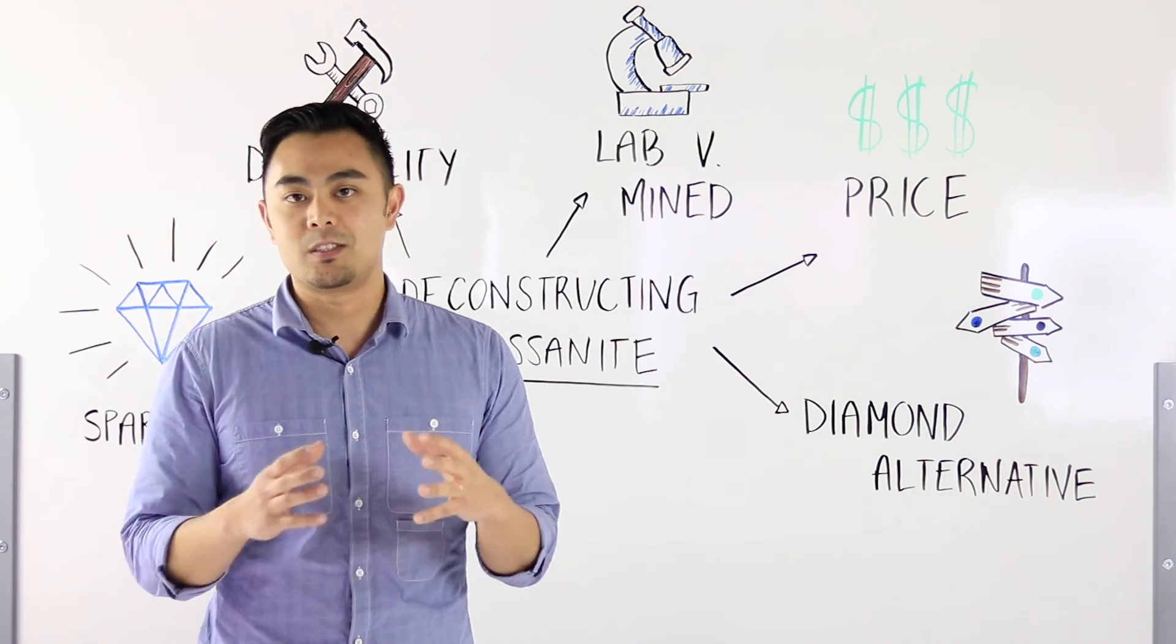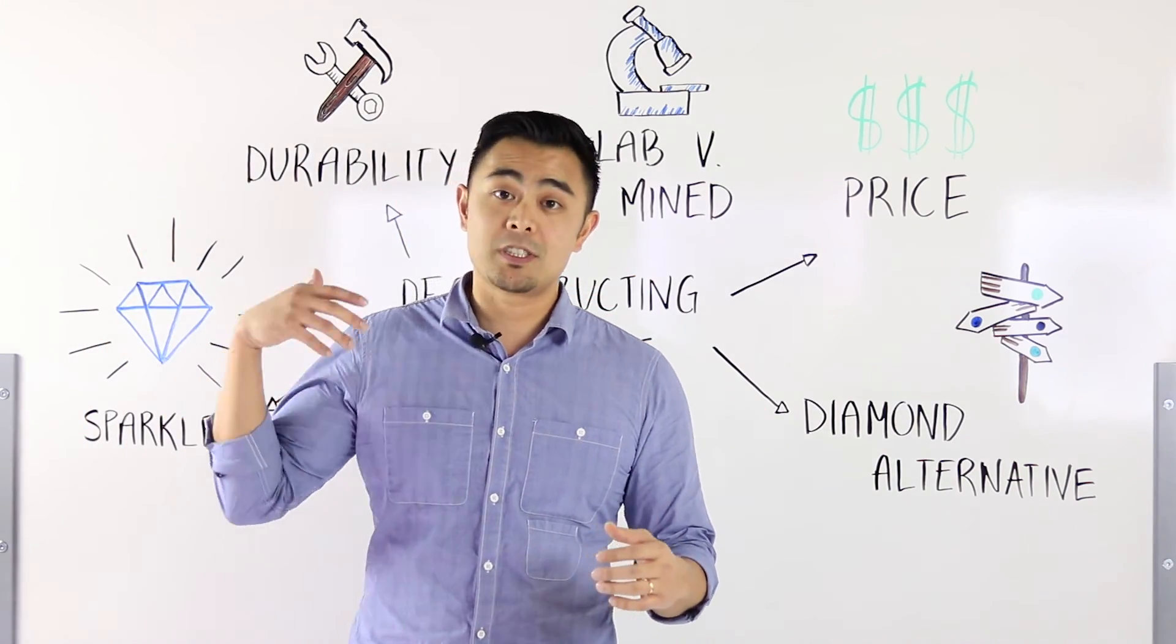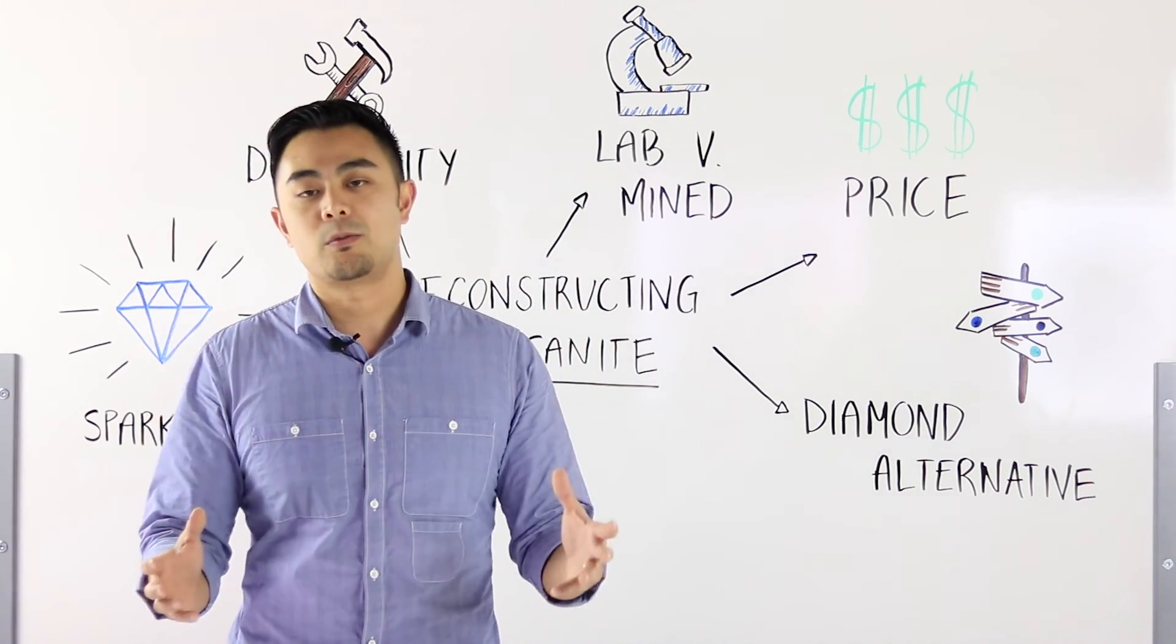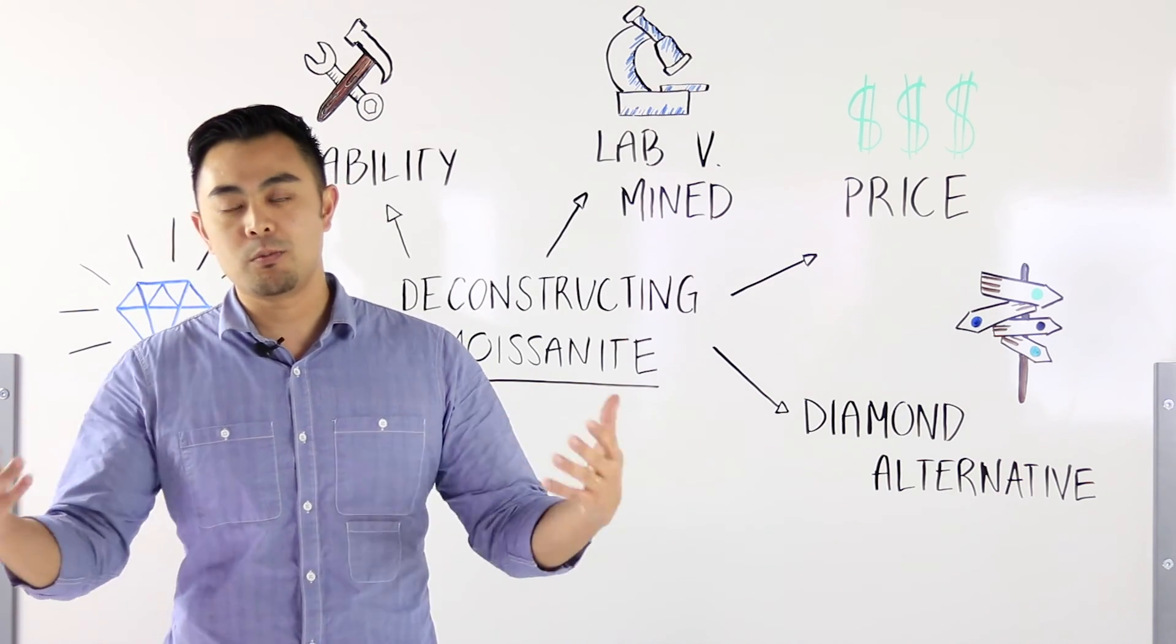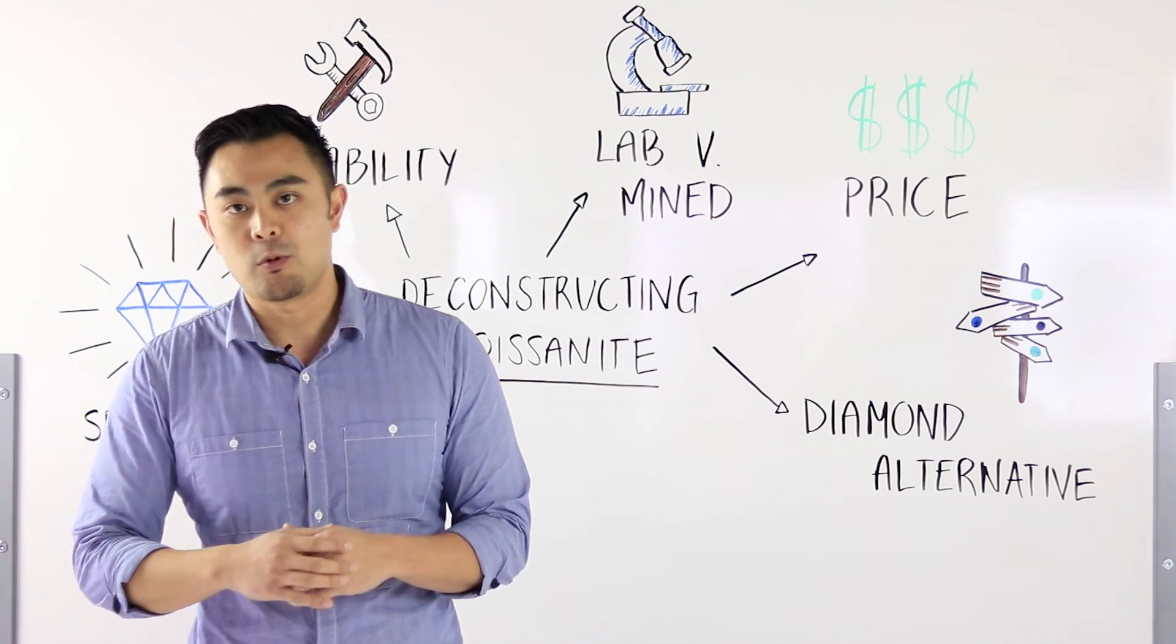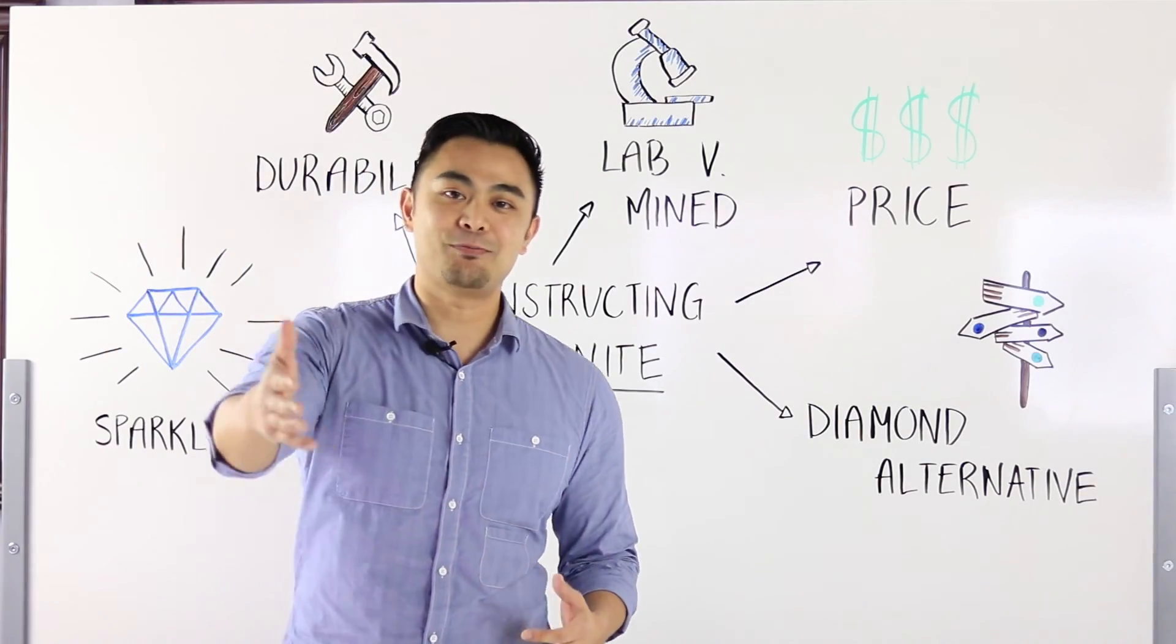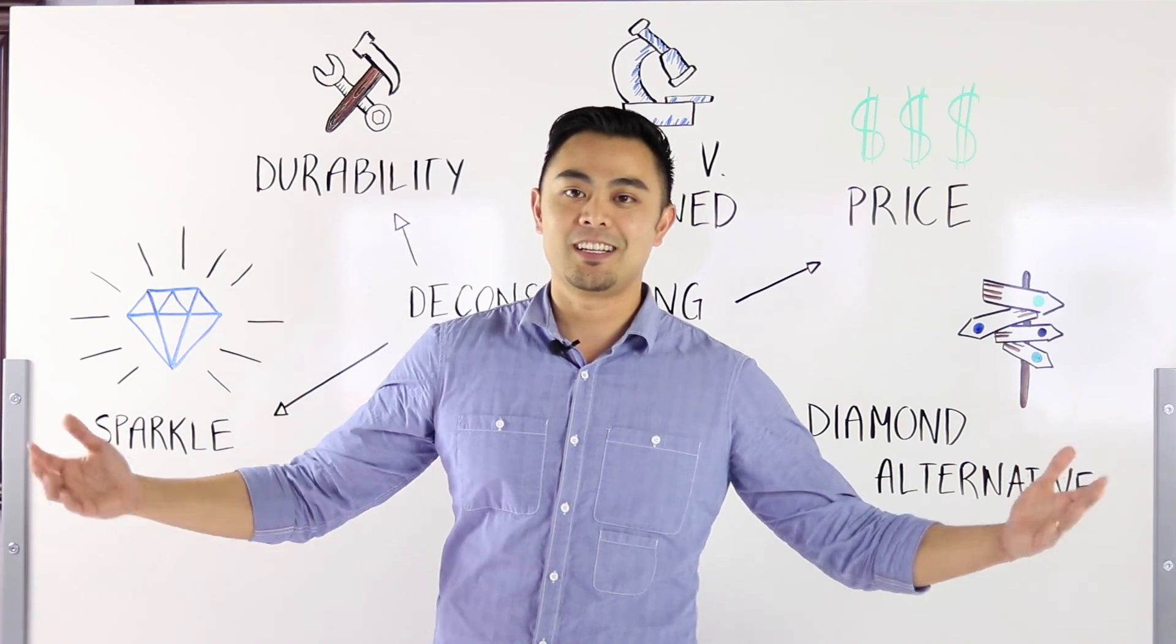What it is to choose a diamond alternative—all that means is that the moissanite has the most similar visual and durable characteristics compared to a diamond. I'll show you more about what I mean when we break it down in our next video. If you like what you hear, go ahead and hit the like button, subscribe to the channel, and we'll see you next time. Thanks for tuning in.